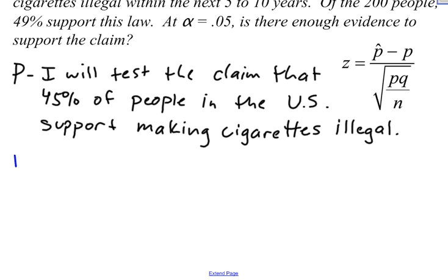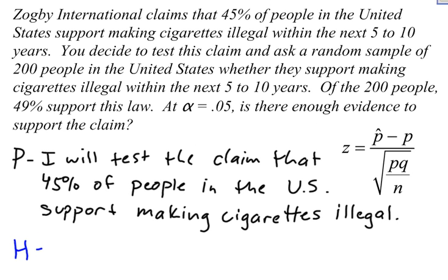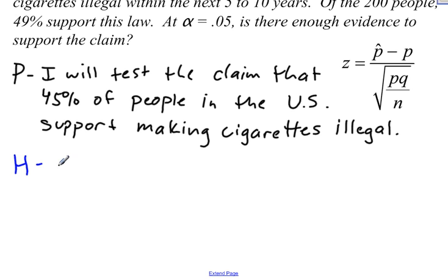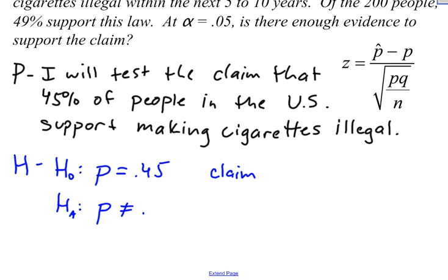The next thing we need to do is write our null and alternative hypotheses — that's H for hypotheses. The claim says that 45% of people in the United States support making cigarettes illegal. They don't say more than or less than 45%, they say exactly 45%. So our null hypothesis is p equals 0.45, and that is our claim. The alternative hypothesis has to be p not equal to 0.45. P here represents the population proportion.